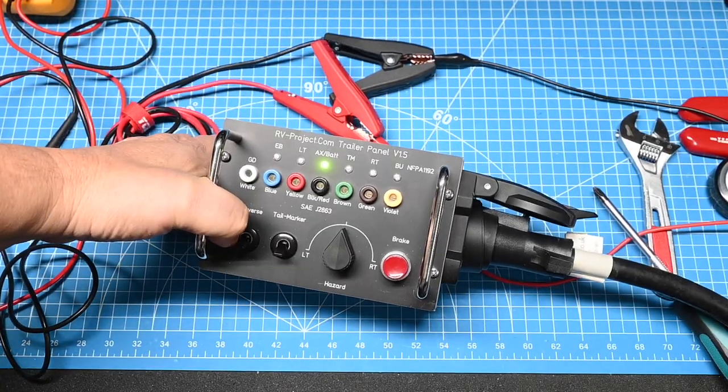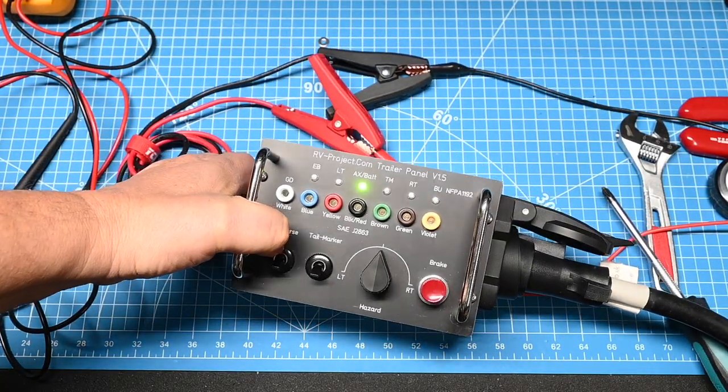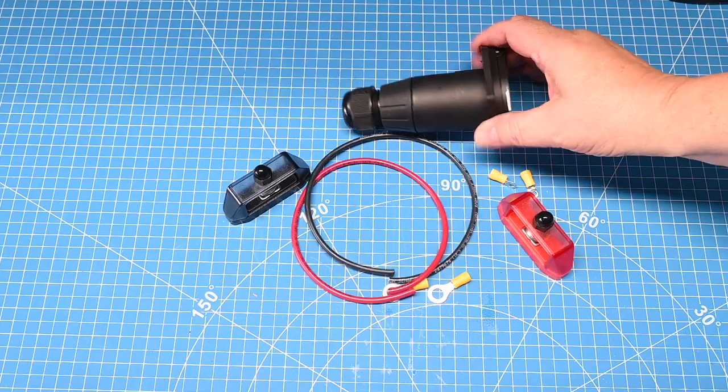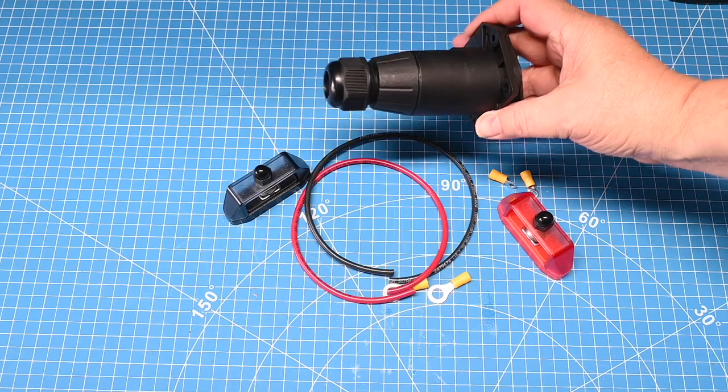The other way you can do it is if you've built my TTS 1.5 test set, plug it into the RV, and you should get a green light showing battery.